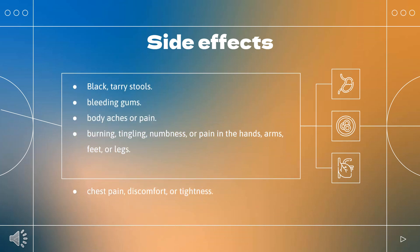Side effects include: black, tarry stools; bleeding gums; body aches or pain; burning, tingling, numbness, or pain in the hands, arms, feet, or legs; chest pain, discomfort, or tightness; chills; cloudy urine; and cough.